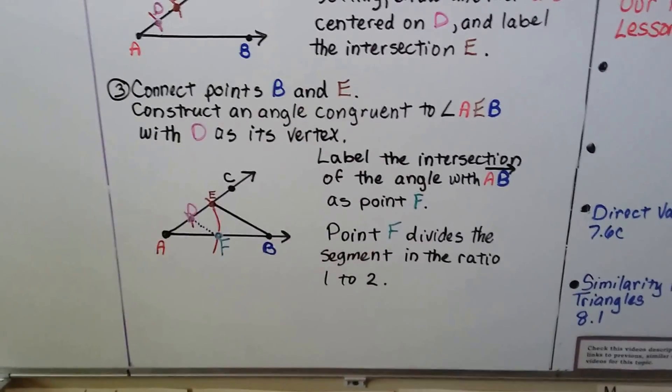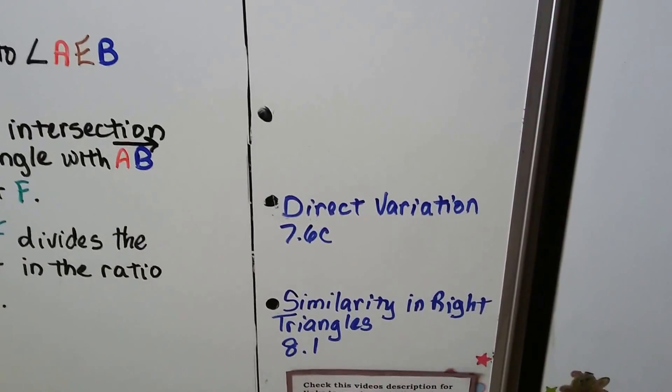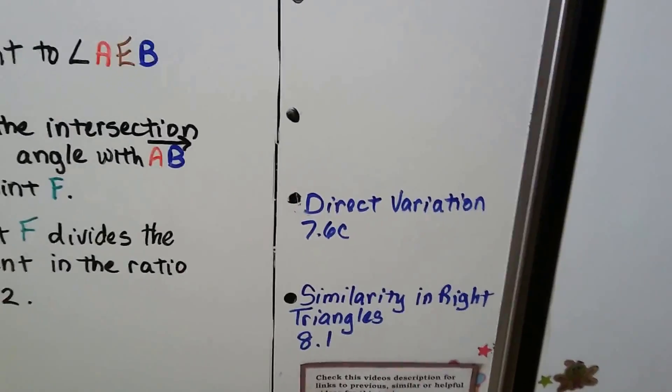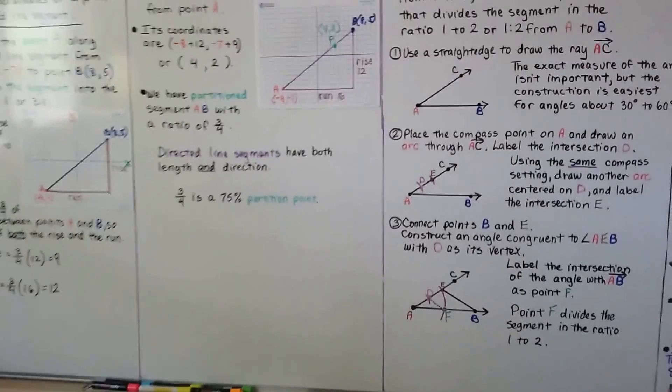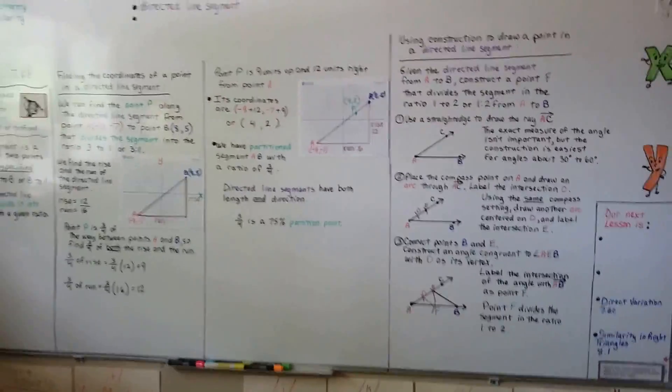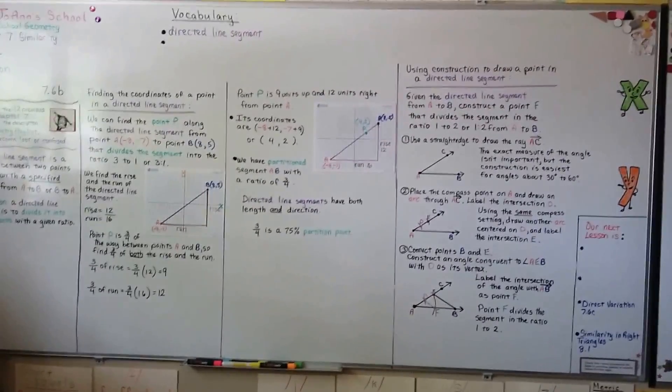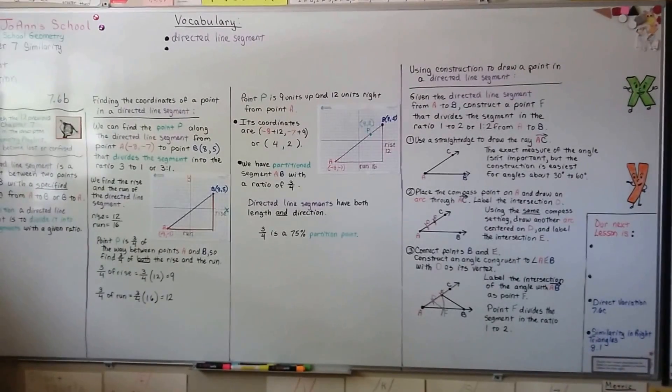Our next lesson is direct variation, that's 7.6 C, before we get into chapter 8. We're going to talk about some right triangles in chapter 8. So, I hope you've been practicing with your compass and straight edge, and now you know how to do a segment partition. Have a great day, and I'll see you next time. Bye!